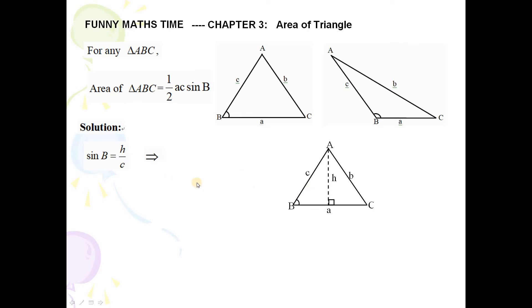Okay, I do the other things. h over C is equal to sine B, and then h is equal to C times sine B. And then by definition of triangle ABC, which is equal to one over two A times h.